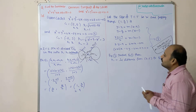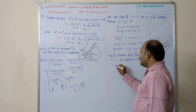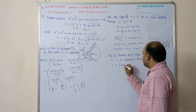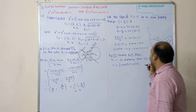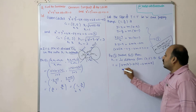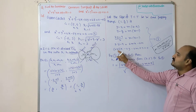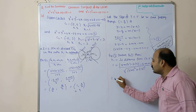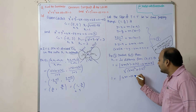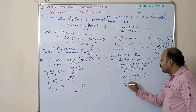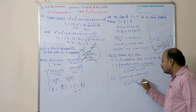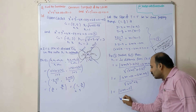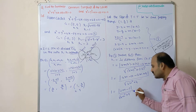Substituting (2, 5) into equation 3: 1 = |2m(2) − 2(5) − 2m + 9| / √((2m)² + (−2)²) = |4m − 10 − 2m + 9| / √(4m² + 4) = |2m − 1| / √(4m² + 4).